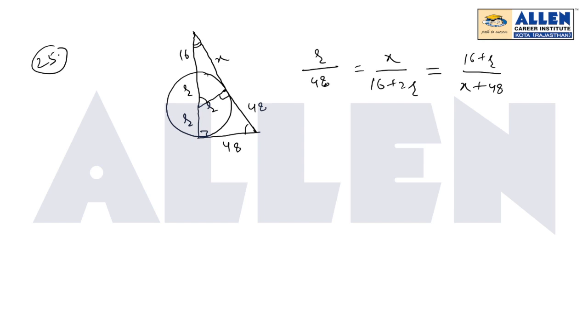Now we will reduce this expression using ratio and proportion property. We will take the difference of numerator and numerator, so ratio is still same. So that is 16 divided by X.